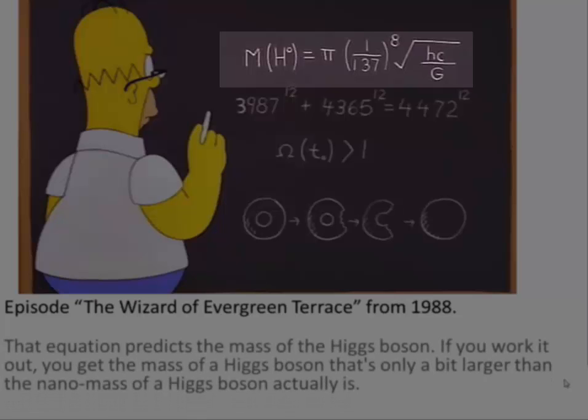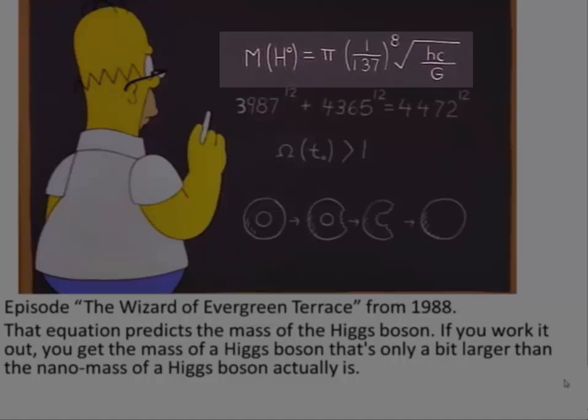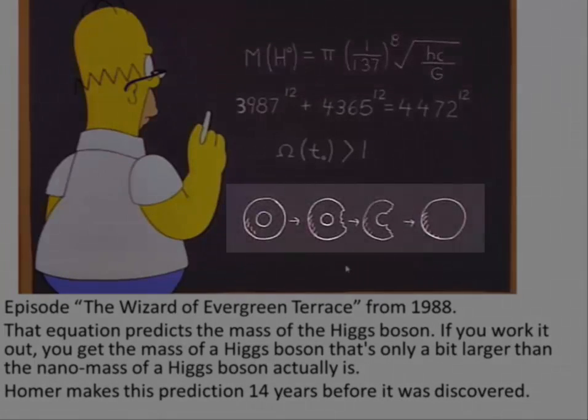This equation predicts the mass of the Higgs boson. If you work it out, it's only a little bit larger than the value that we know today of being the Higgs boson. So this was done 14 years before the Higgs boson was actually discovered.